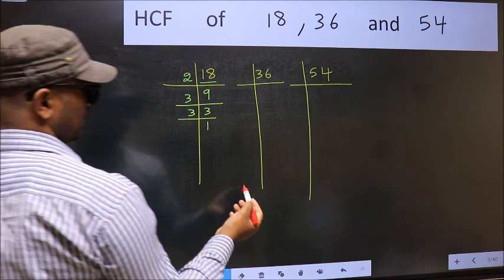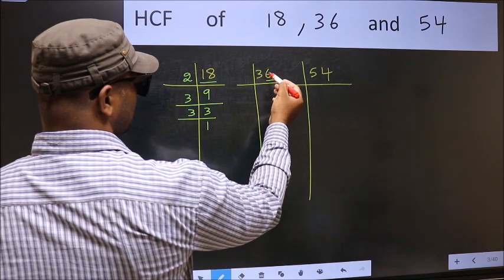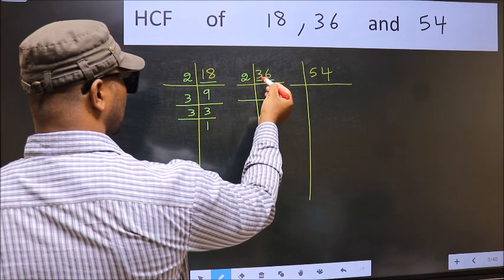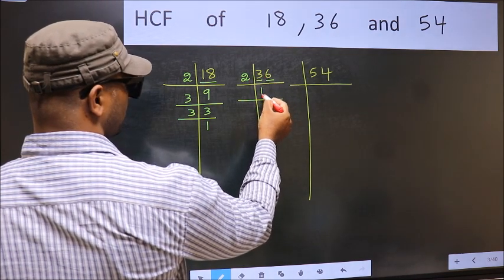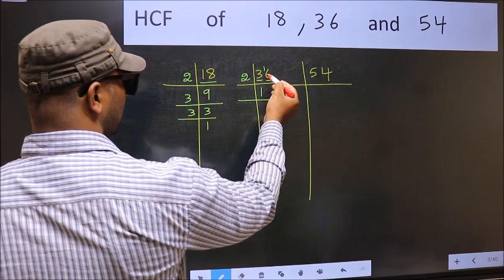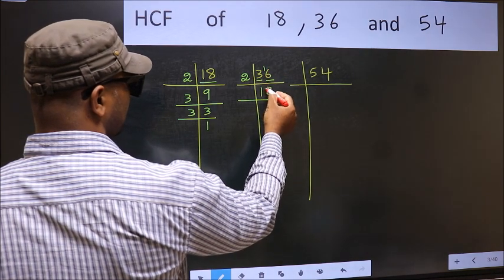Now the other number. Last digit 6, even, so take 2. First number 3. A number close to 3 in the 2 table is 2 times 1, which is 2. 3 minus 2 is 1, carried forward makes 16. When do we get 16 in the 2 table? 2 times 8 is 16.